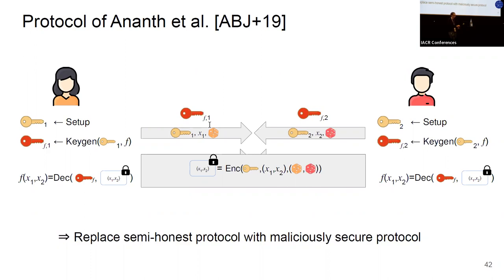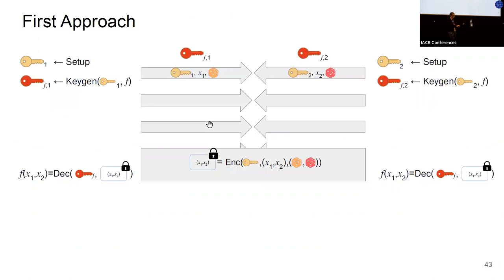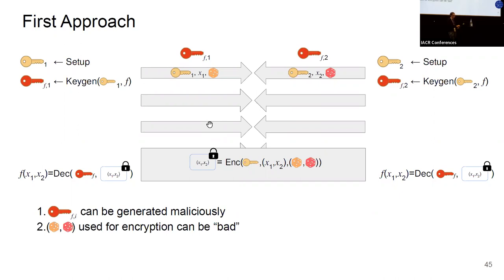The idea to move to the maliciously secure setting would be to replace the two-round protocol with a maliciously secure four-round protocol — a direct translation of this transformation. However, because the adversary is more powerful, several issues remain, so this is not yet secure. First, the functional key shares can be generated maliciously with arbitrary values. Second, the randomness used for encryption inside the MPC might be bad. Third, the master secret keys also do not need to be generated honestly.